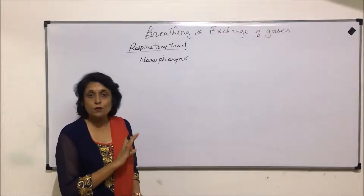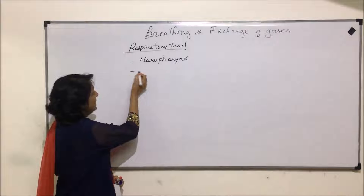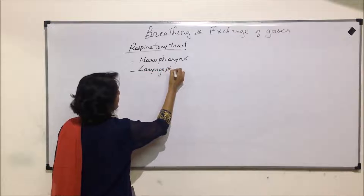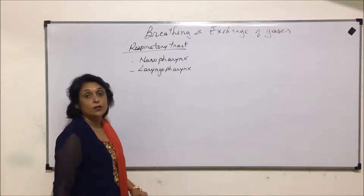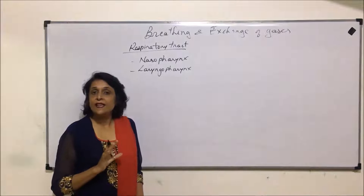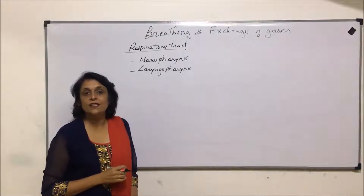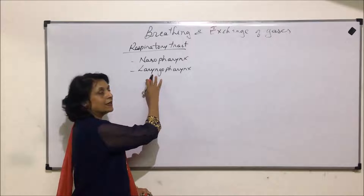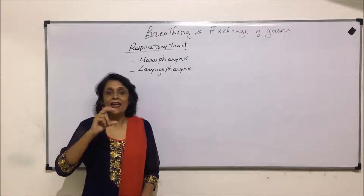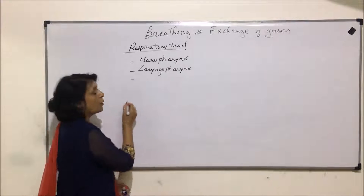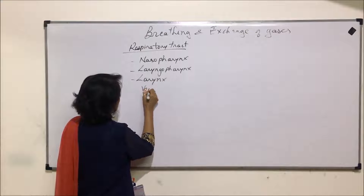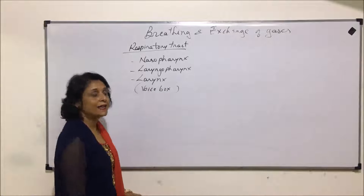The next part is laryngopharynx. The pharynx has three parts: the nasopharynx, where there is the opening of the internal nares; the oropharynx; and the laryngopharynx. The laryngopharynx is the lower part which leads into the trachea, the windpipe. Just above it is the voice box, also known as the larynx or Adam's apple.